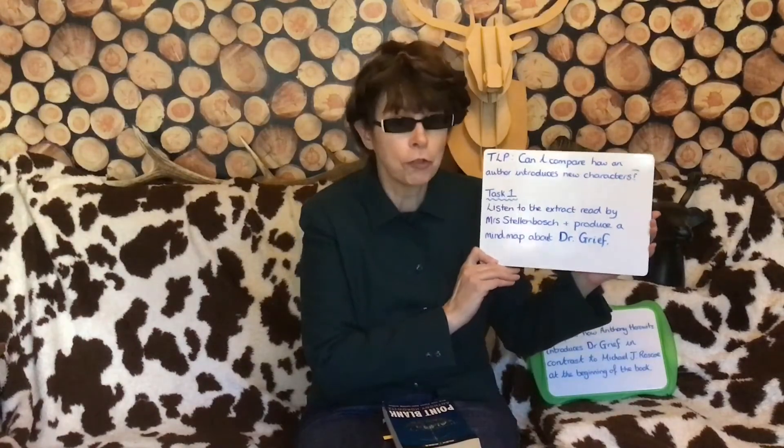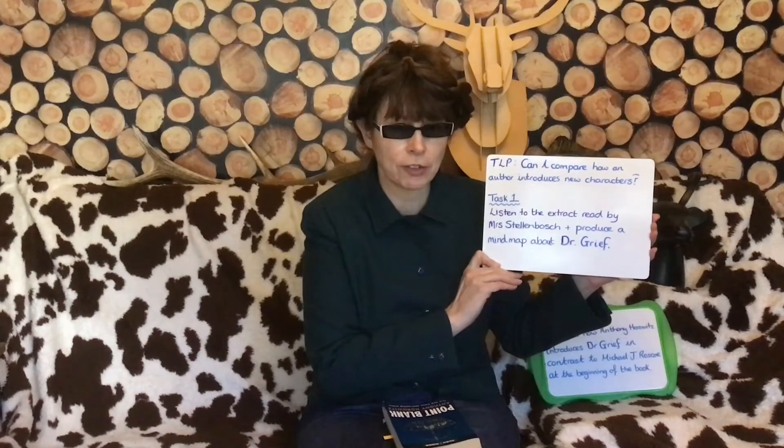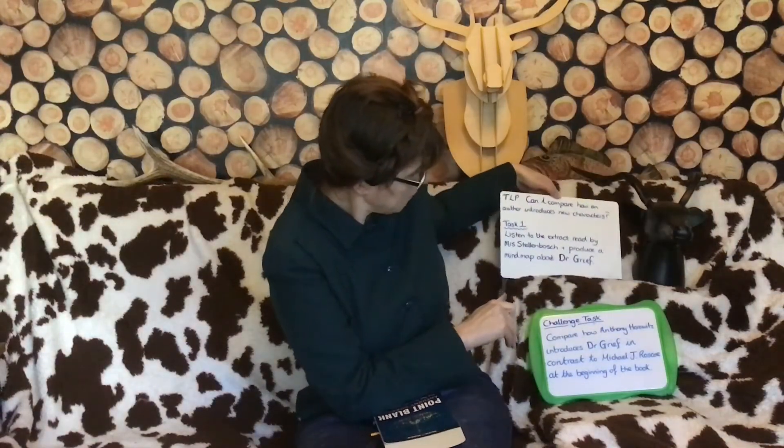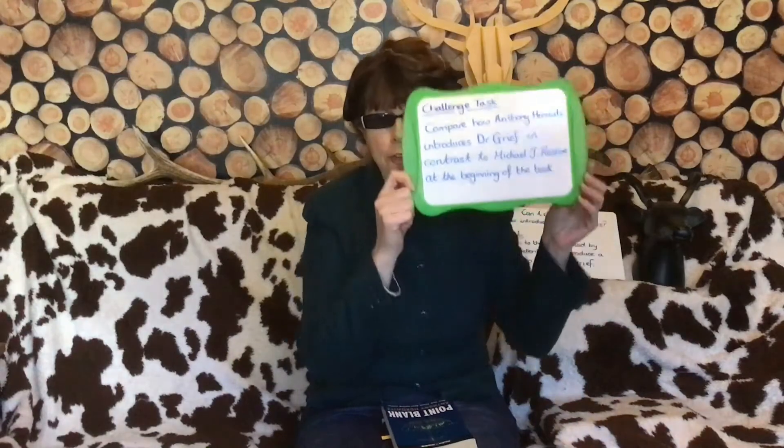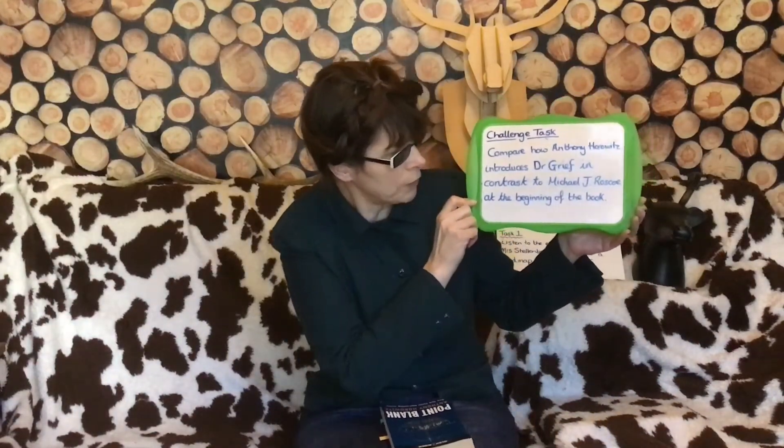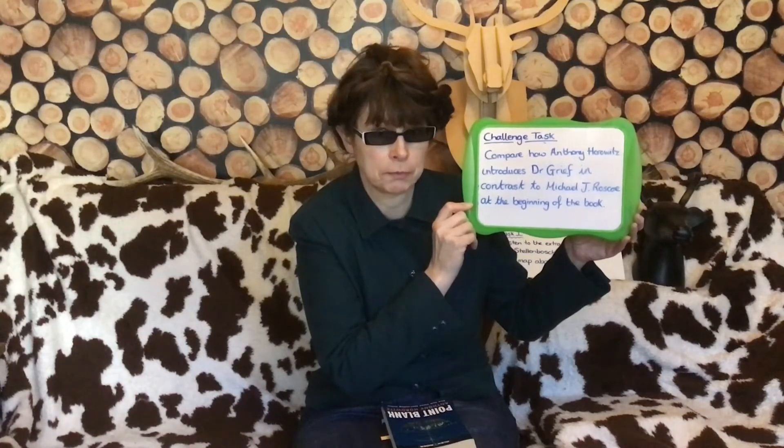You are being asked to compare how an author introduces new characters. Your first task is to listen to the extract I shall now read and produce a mind map about Dr Grief. Then those of you who like a challenge should go on to compare how Anthony Horowitz introduces Dr Grief in contrast to Michael J Roscoe, who we learnt about at the beginning of the book. Good luck, Year 6. Listen carefully so you can complete this task.